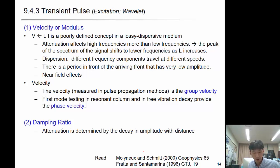The other method is the transient pulse method. The transient pulse method is like you have a source and receiver type of system. The challenging thing is determination of T, because you need to know L and delta T, the travel time. T is a fully defined concept in a low dispersive medium. Attenuation affects the high frequency more than low frequency. The peak of the spectrum of the signal shifts to lower frequency as L increases. Also, U will have dispersion as soil is dispersive media. Different frequency components travel at different speeds. There is a period in front of the arrival front that has very low amplitude. Near field effect can also affect, especially in bender element testing.